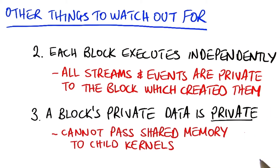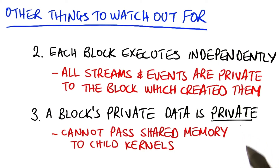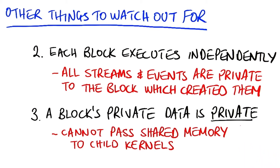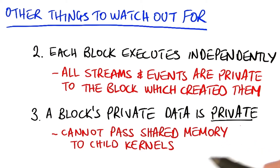Data that's private to a block, like shared memory for example, is private to that block. That means you cannot pass shared memory to your child kernels. So if I have some data that my block has accumulated in shared memory, which is a pretty common thing to do in CUDA, I would have to write this out to global memory in order for my child kernel to see it.